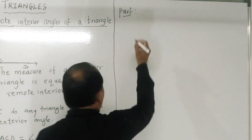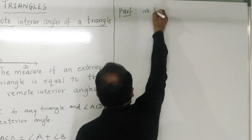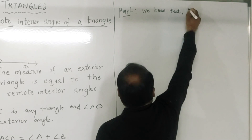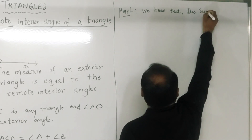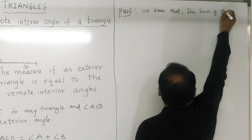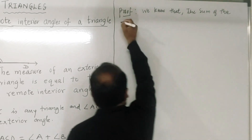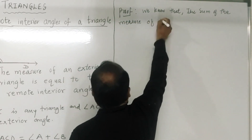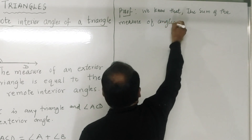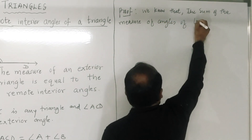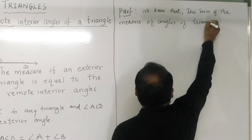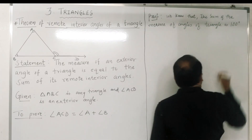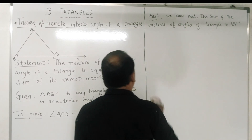We know that the sum of the measures of angles of a triangle is 180 degrees. Therefore, in triangle ABC, angle A plus angle B plus angle ACB is equal to 180 degrees. This is equation number 1.